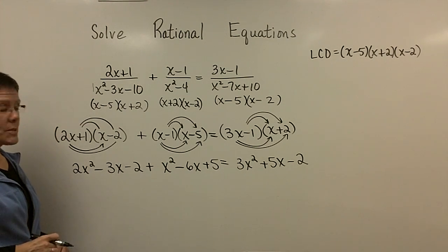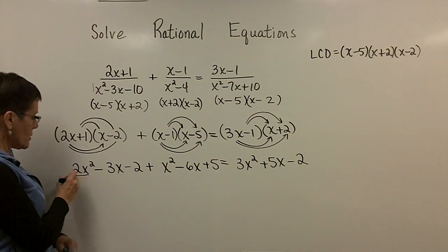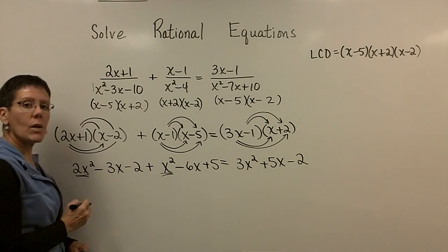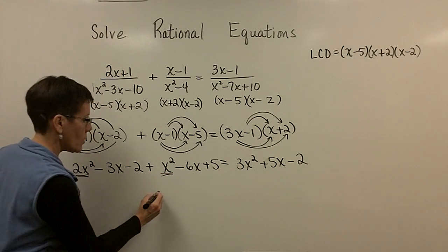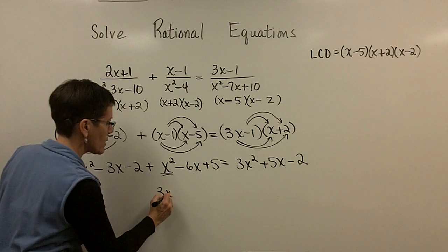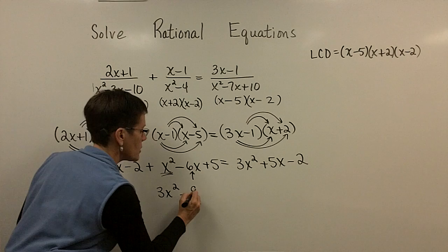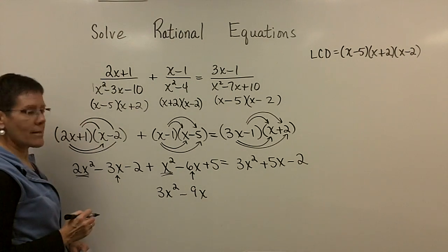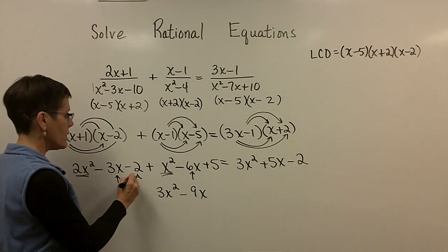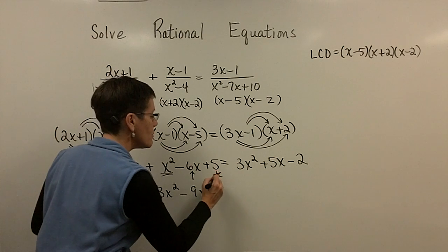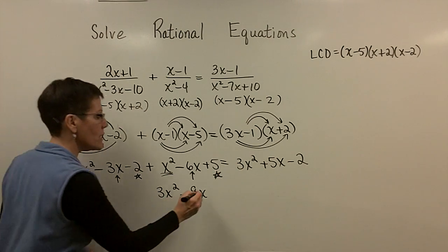So I've got to collect my like terms. I notice that over here I've got 2x squared and 1x squared, that totals up to be 3x squared. And then here I have minus 3x and minus 6x for a total of minus 9x. And here I've got minus 2 and positive 5, those add to be 3.